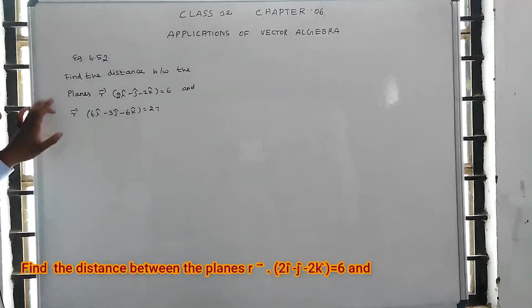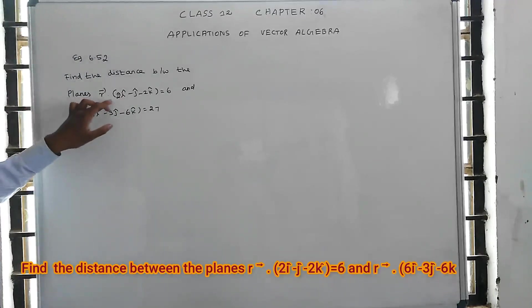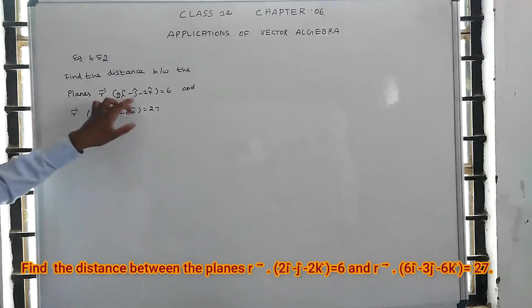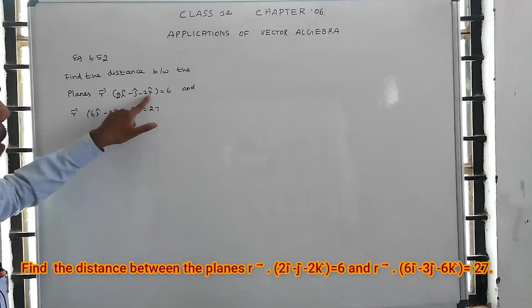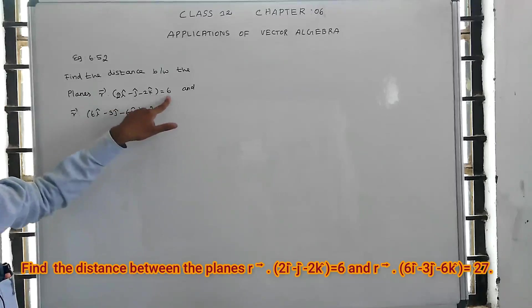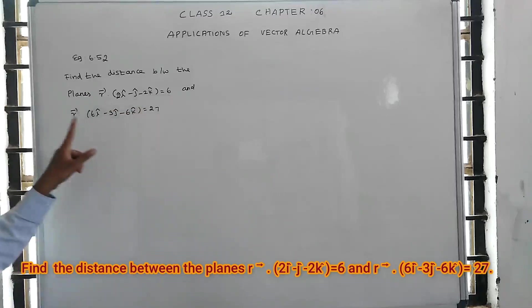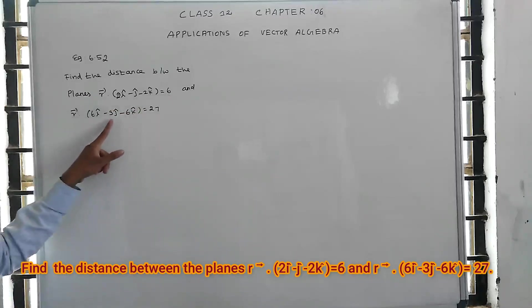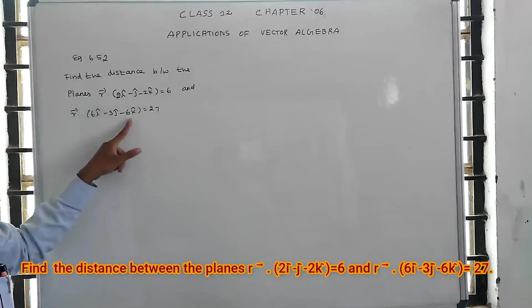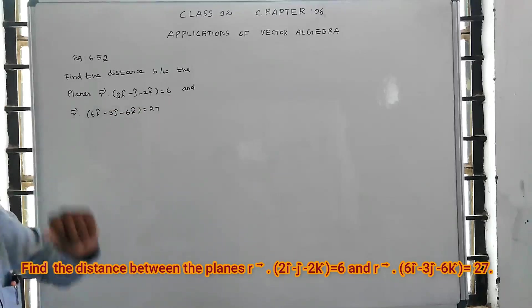Find the distance between the planes: r-vector dot (2i − 6j − 2k) = 6 and r-vector dot (6i − 3j − 6k) = 27.